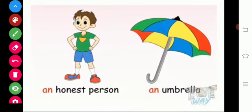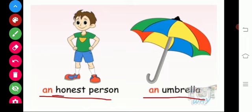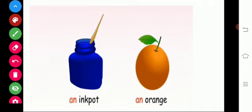And then — an honest person. An umbrella. Here H is silent. We pronounce it 'honest person,' so we use AN in front of honest person. An umbrella — U is a vowel letter. An ink pot, an orange — I is a vowel letter and O is a vowel letter.